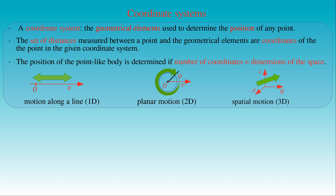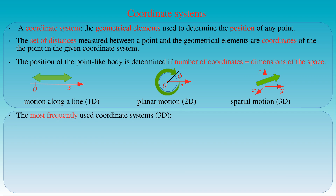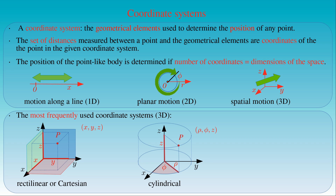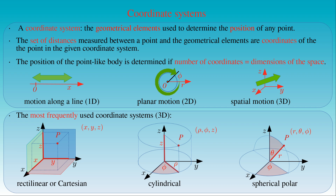For spatial motions we need to apply three-dimensional coordinate systems, where three coordinates determine the position of a body in space. The most popular coordinate systems in mechanics are constructed by applying an orthogonal set of three axes. We will use three of these: the Cartesian or rectilinear coordinate system with coordinates X, Y, and Z; the cylindrical coordinate system with coordinates Rho, Phi, and Z; and the spherical polar coordinate system with coordinates R, Theta, and Phi. In all three cases the coordinates are distances or angles describing the position of point P with respect to the origin and axes of the coordinate system.